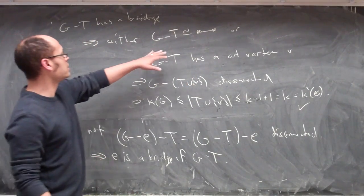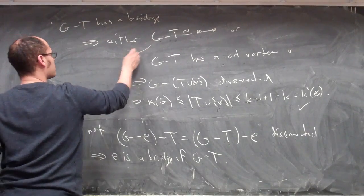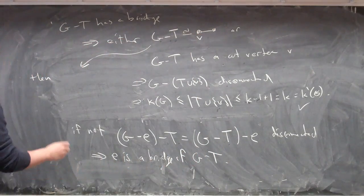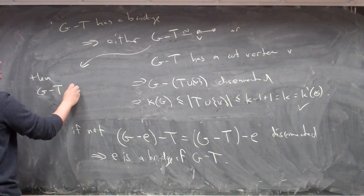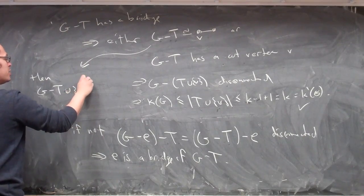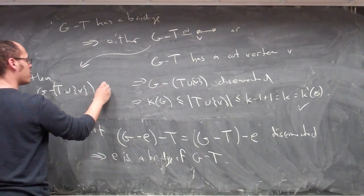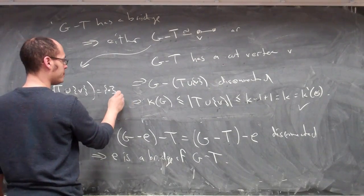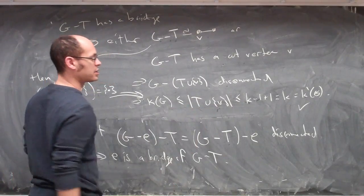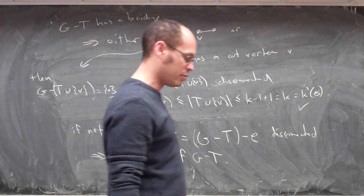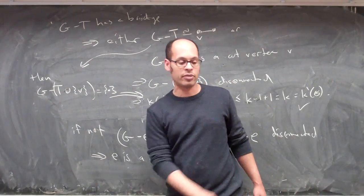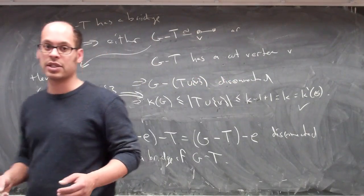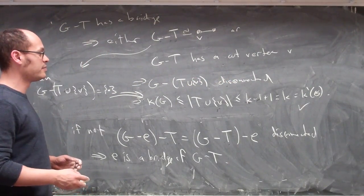So if G minus t has a cut vertex, then we're done. The only remaining possibility is that G minus t looks like the dumbbell. But if G minus t looks like the dumbbell and I call the middle vertex v, then G minus t minus v is a graph that consists of a single vertex. So by removing t union {v} from G, I achieve a graph which is either disconnected or has one vertex — either way it works — and that gives me that the vertex connectivity is bounded by k in each of those cases. And we're done.